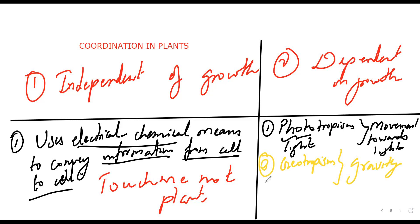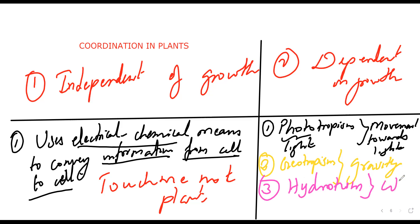The third type is hydrotropism. The name itself gives us the answer — 'hydro' means water, so hydrotropism is movement towards water.